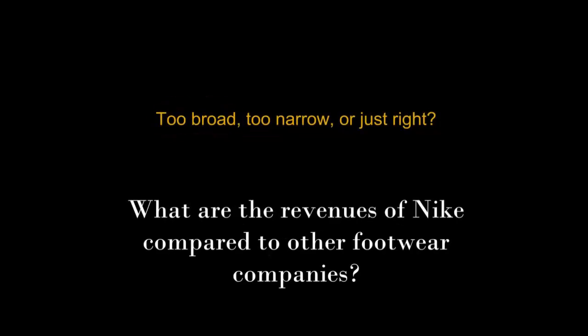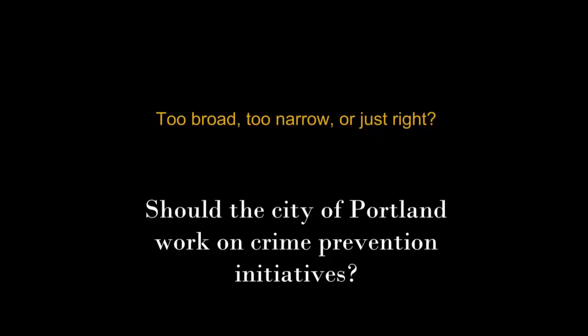This is an example of a topic that's too narrow. You can look up the numbers and write them down, but then what will you say for the rest of your paper? This question takes research to answer, but it's not good for a research paper—it's almost just a math problem. This is an example of a topic that everyone agrees on already; you won't find any credible expert arguing against crime prevention. This is a special case of too narrow where there isn't a real diversity of points of view on the topic.